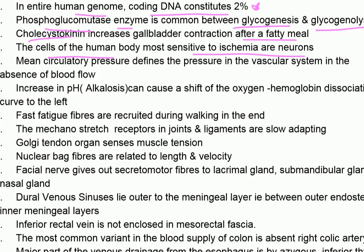Mean circulatory pressure defines the pressure in the vascular system in the absence of blood flow. Increase in pH, that is alkalosis, can cause the oxygen-hemoglobin dissociation curve to shift to the left.